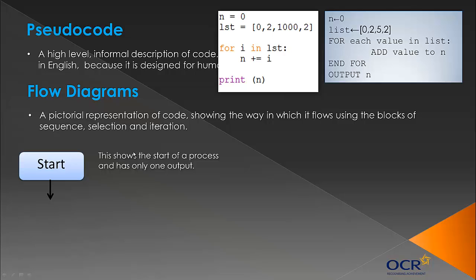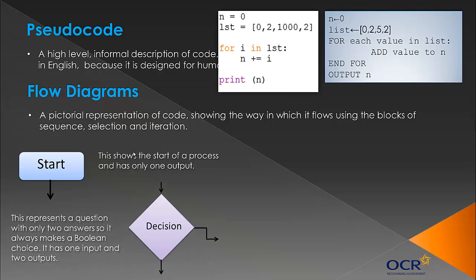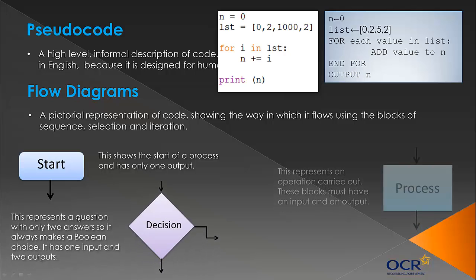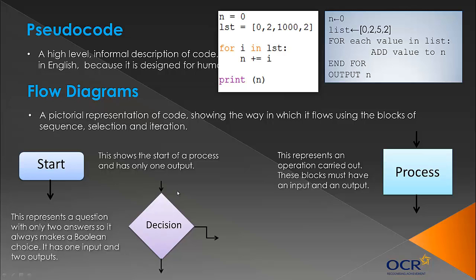First of all, you have the start block. This denotes the start of your program or the start of an algorithm, and it has only one output. It has no inputs. If you're doing an algorithm with an input, you'd do another block below it. You'd have a process block, which is here. The decision block is the selection stage, the selection block. I'll talk about that in more detail in a couple of videos' time. It makes a Boolean choice. It has one input and two outputs. A process block represents an operation carried out, such as what the algorithm actually does. It has an input and an output.